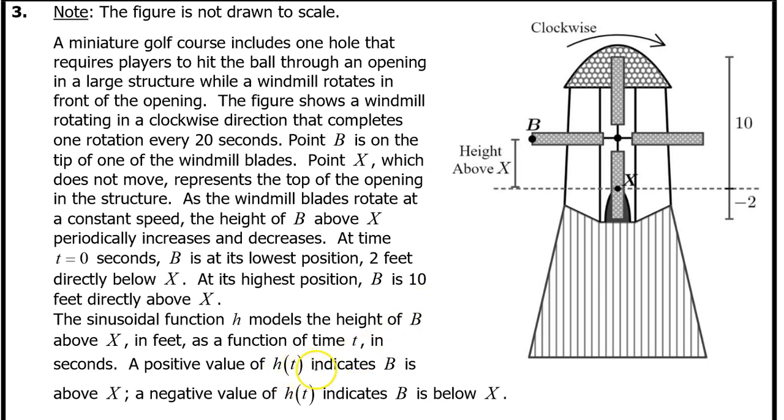Remember, h(t) indicates the height above and below point X. These numbers on the side sort of give away the high and low. Ten units above point X is the high, and two units below point X is the low.